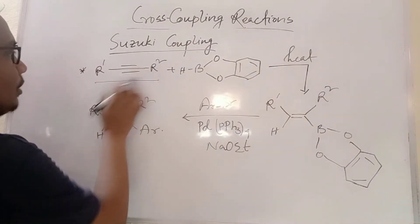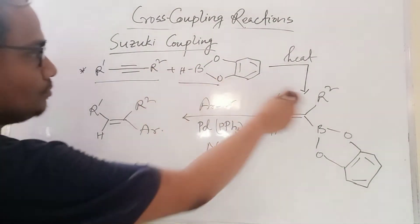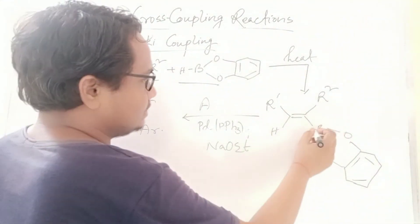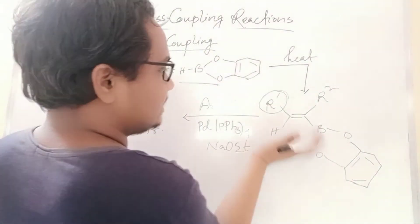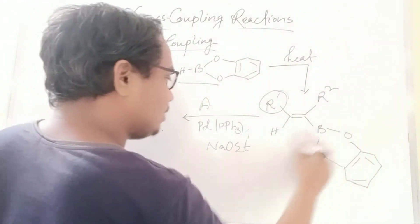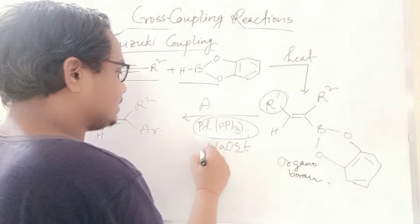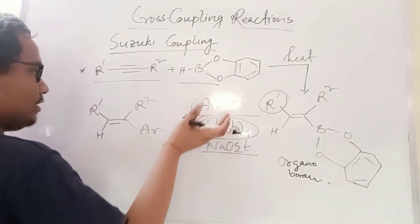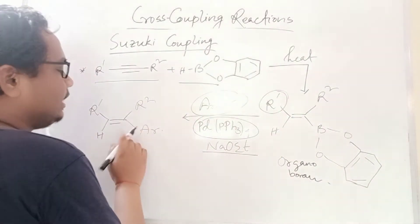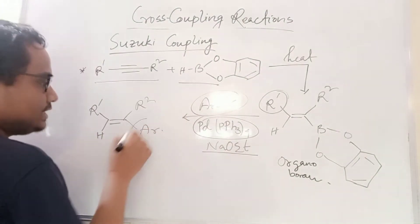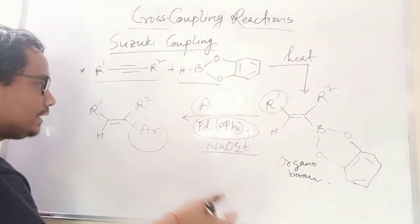Boron addition occurs — syn addition: hydrogen comes to one face and boron to the other, giving the organoboron compound. This organoboron in the presence of palladium catalyst, base, and alkyl halide or aryl halide gives the coupled product — the double bond from this organoboron couples with the halide. This is the application of Suzuki reaction: boron compound plus alkyl halide plus palladium catalyst gives the coupled product.